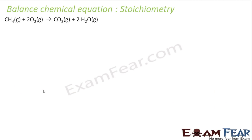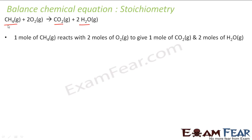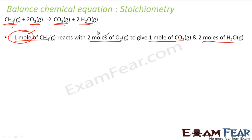A balanced chemical reaction is also used in stoichiometry. For example, CH₄ + 2O₂ → CO₂ + 2H₂O. This tells us that one mole of methane reacts with two moles of oxygen to give one mole of carbon dioxide and two moles of water. Please note everything is in terms of moles. I cannot say one gram of methane reacts with one gram of oxygen to give one gram of carbon dioxide — I have to express it in moles.